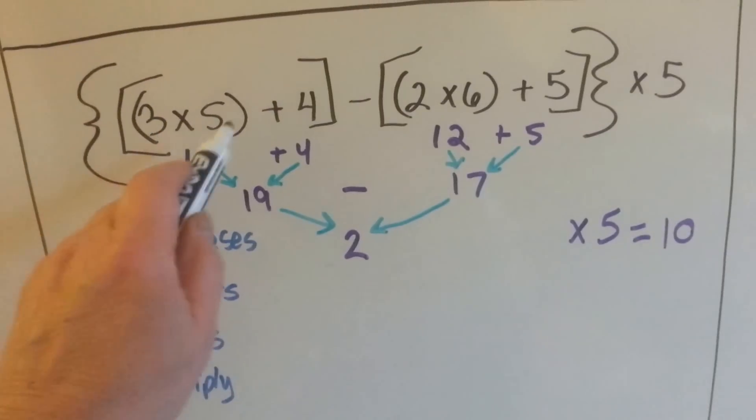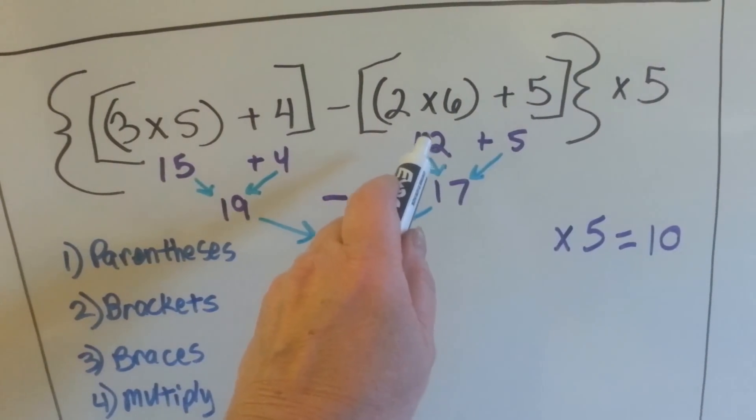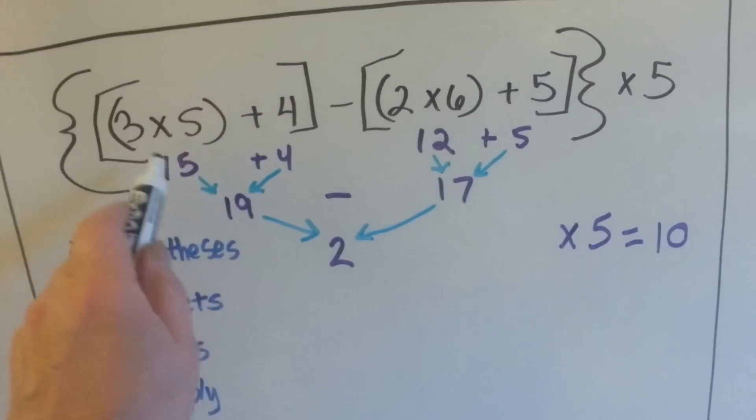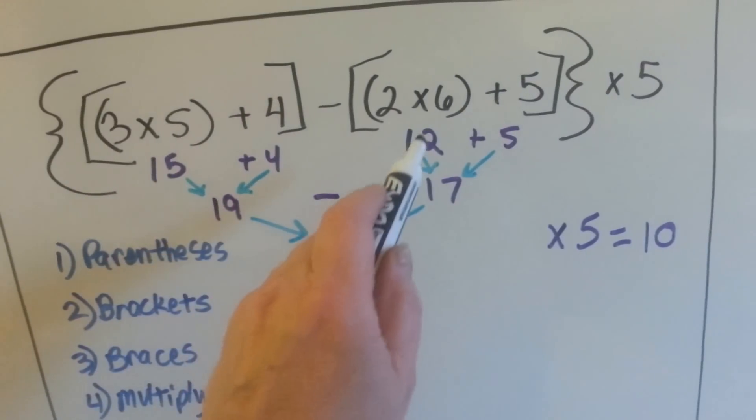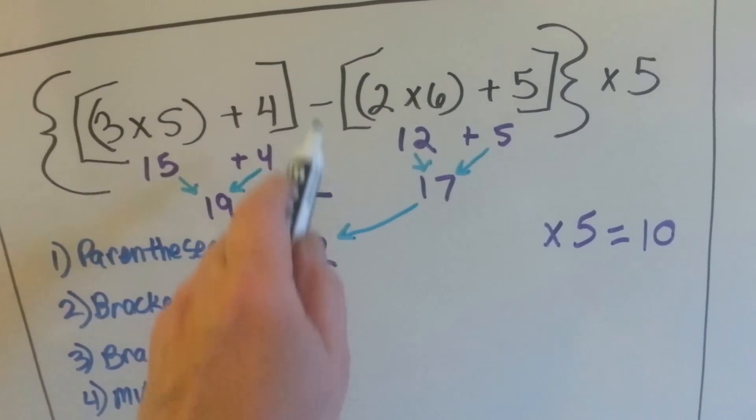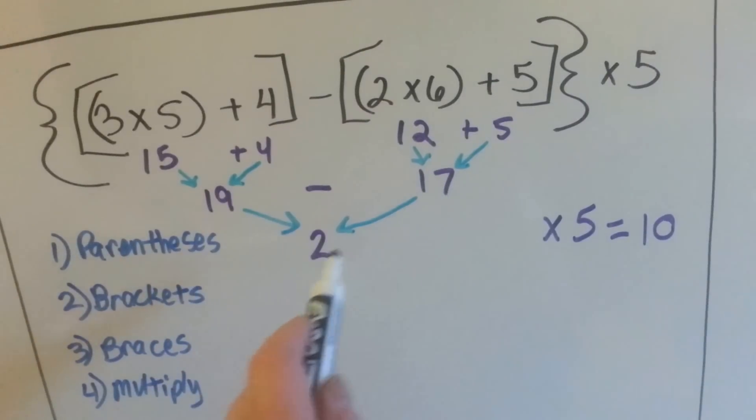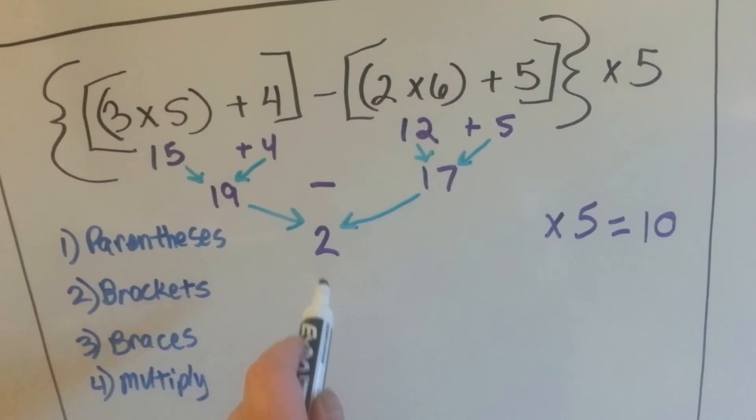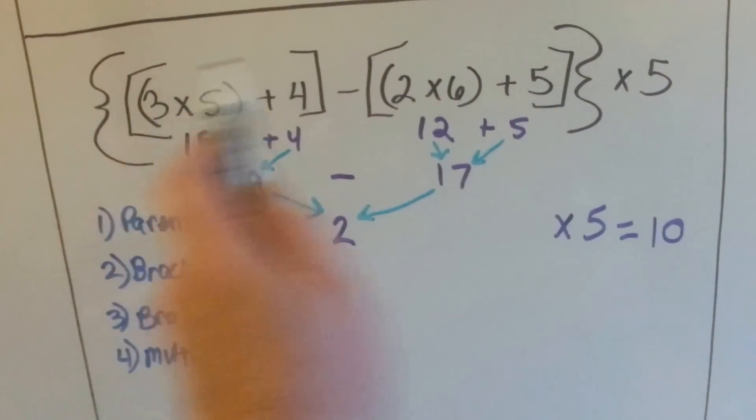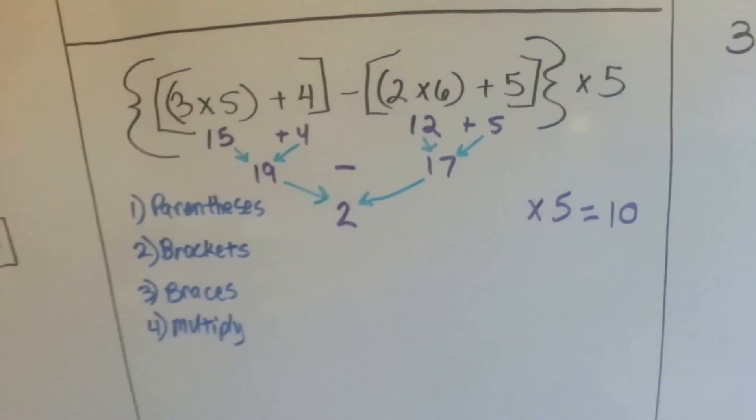So let's do parentheses. 3 times 5 is 15. 2 times 6 is 12. So now let's do brackets. We've got 15 plus 4. 15 plus 4 is 19. We can do 12 plus 5, which is 17. Now we can do what's inside the braces, the 19 minus 17. That gives us 2. 2 times 5 is 10. Out of all this busy, crazy looking math stuff, the answer was 10. Not that hard.